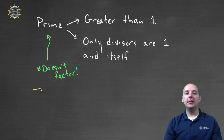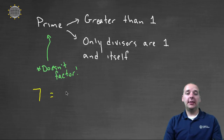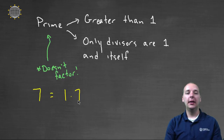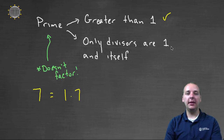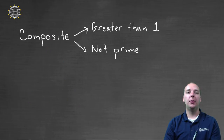Maybe let's do the same thing that we did for twelve with the number seven. So how would we factor seven? Well, you could say one times seven, but that's it. There's no two times anything, three, four, five, or six times anything that'll give you the number seven. So it's greater than one, seven is, and the only divisors that it has are one and itself. So seven would be considered a prime number.